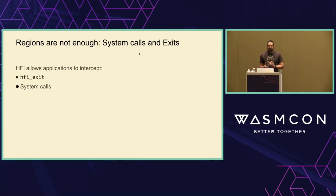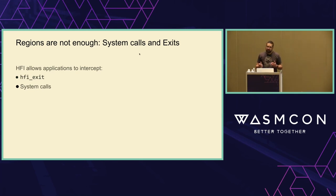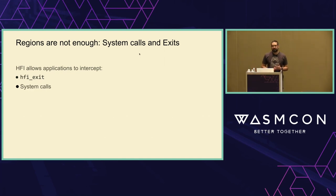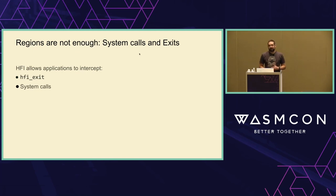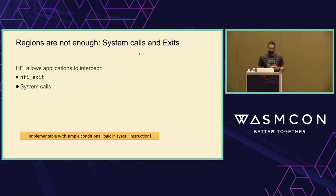Regions alone aren't enough — we also need control over control flow. Shravan and I were discussing what to do about system calls. I've written kernel-level system call interposition mechanisms and library interposition mechanisms, and I hate them all. What I want is support from the processor. If you exit the sandbox or make a system call, it just redirects to a handler that hands it to the runtime. This is implementable with simple conditional logic for a smaller processor, or microcode for a big x86 core.